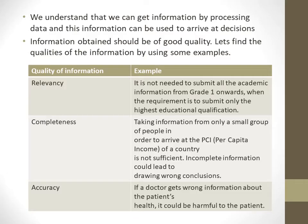When we understand information and use it to make decisions, it should be of good quality. So let's see what the qualities of information are. I have listed some things and given some examples. The first quality is relevancy — all the information submitted should be relevant to the particular area or subject.